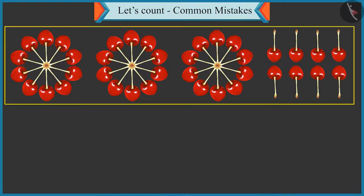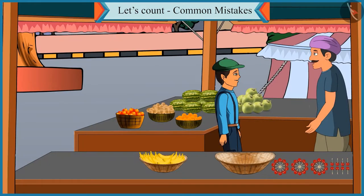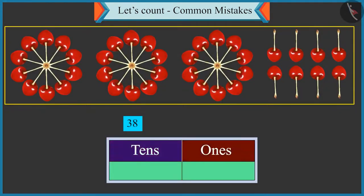Oh, Chotu, there are thirty-eight cherries in total. Thirty-eight means three tens and eight ones. Now think carefully and tell me, how will you write thirty-eight in the boxes of tens and ones?